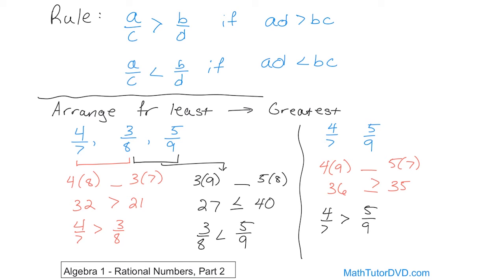Now put all the information together. We're arranging from least to greatest. 3 eighths is the smallest fraction. Of the remaining two, 4 sevenths is bigger than 5 ninths, so 5 ninths is next, and 4 sevenths is last. The answer is: 3 eighths, 5 ninths, 4 sevenths. When comparing three fractions, you just do multiple pairwise comparisons to get the job done.